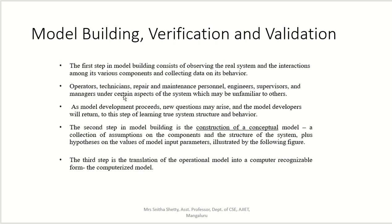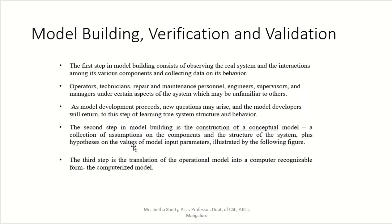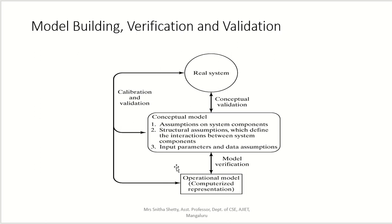The first step in model building consists of observing the real system, the interaction among its various components, and collecting data on its behavior. For example, operators, technicians, repair and maintenance persons, engineers, supervisors, and managers understand certain aspects of the system. As model development proceeds, new questions may arise and the model developer returns to this step of learning about system structure and behavior. All data, assumptions, and attributes are clarified and collected.